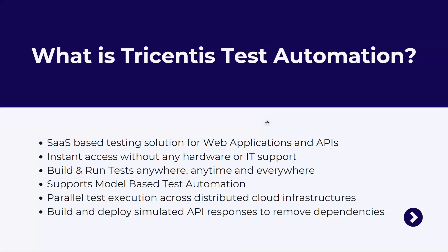Similar to Tosca, Tricentis Test Automation also uses model-based test automation, where you create different modules that can be reused across your workspace for building tests for different applications. You can also parallelly execute all your tests using a distributed cloud infrastructure, with different cloud agents running tests simultaneously.